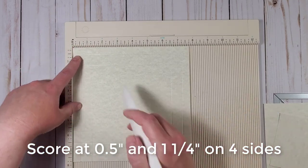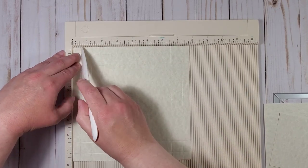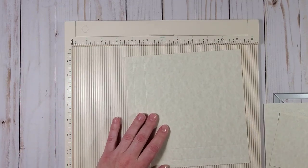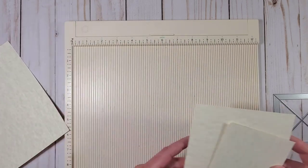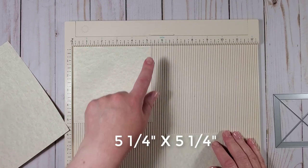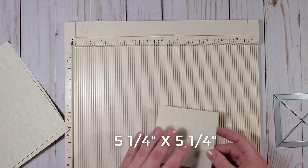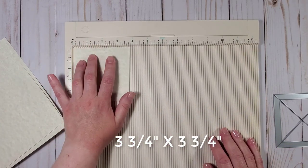So you will rotate the cardstock piece each time and score it at half an inch and an inch and a quarter all the way around. Let's set this aside for now and talk about the next piece which is five and a quarter by five and a quarter and the smallest piece is three and three quarters by three and three quarters.